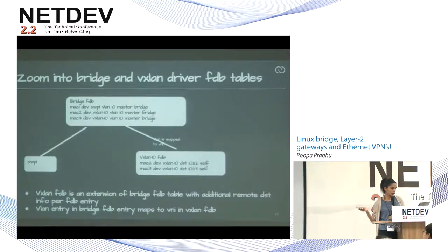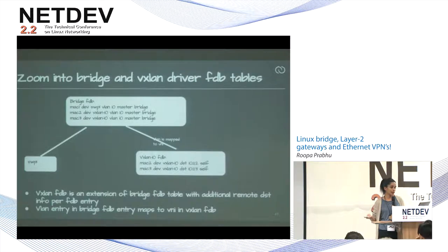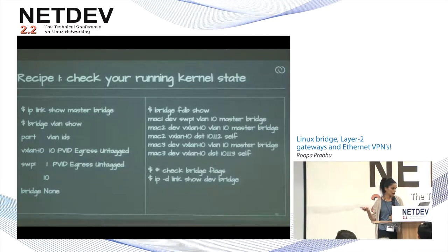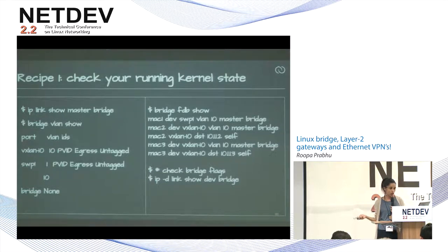The FDB tables: the bridge FDB for the remote MAC — MAC 2 was on Rack 2, MAC 2 points to the VXLAN device, VXLAN in turn points to the VTEP on the middle rack. To check your running kernel state, you have many commands: IP link show, bridge VLAN show, or bridge FDB show. To check the flags on your bridge ports, you can use IP link show.